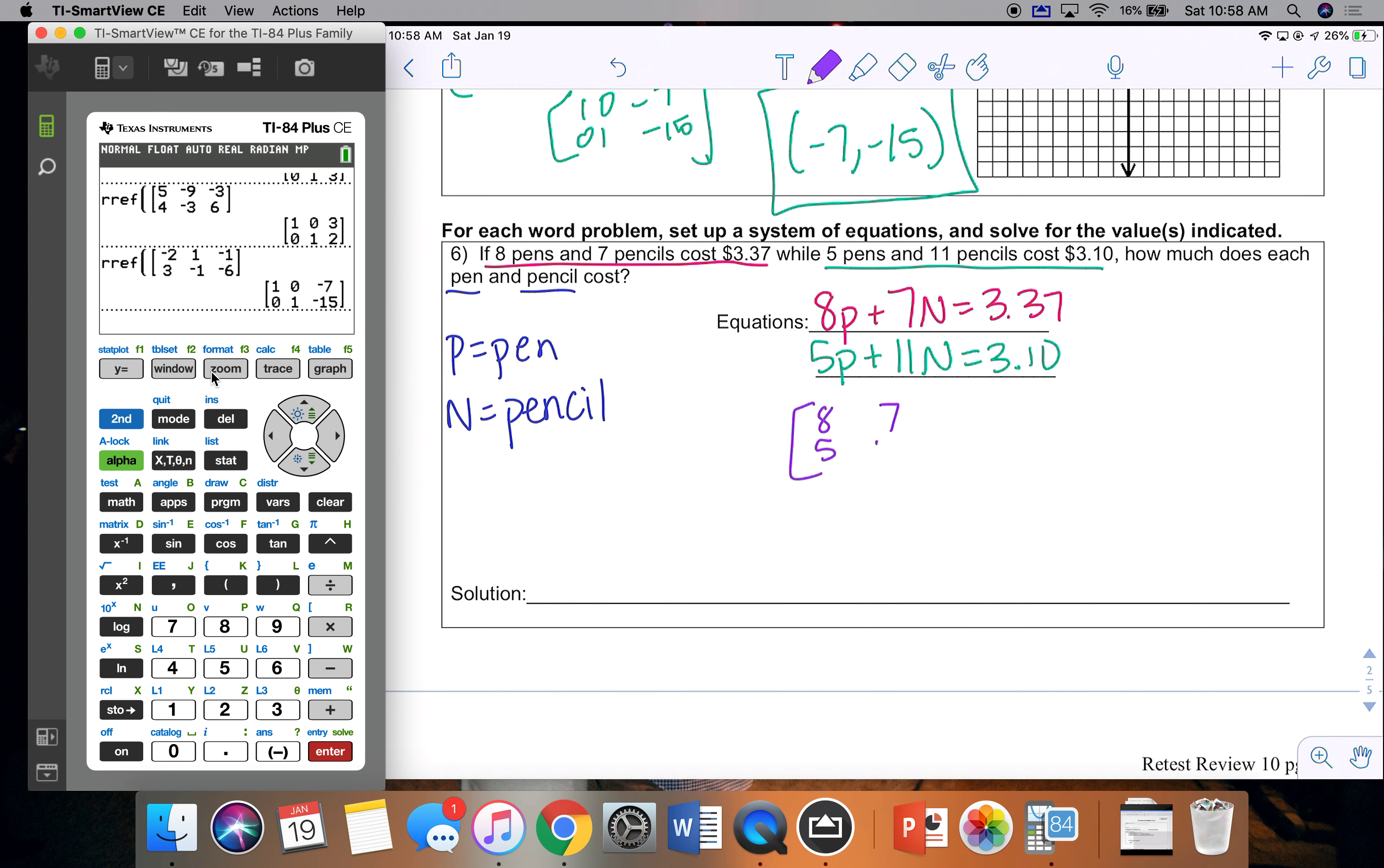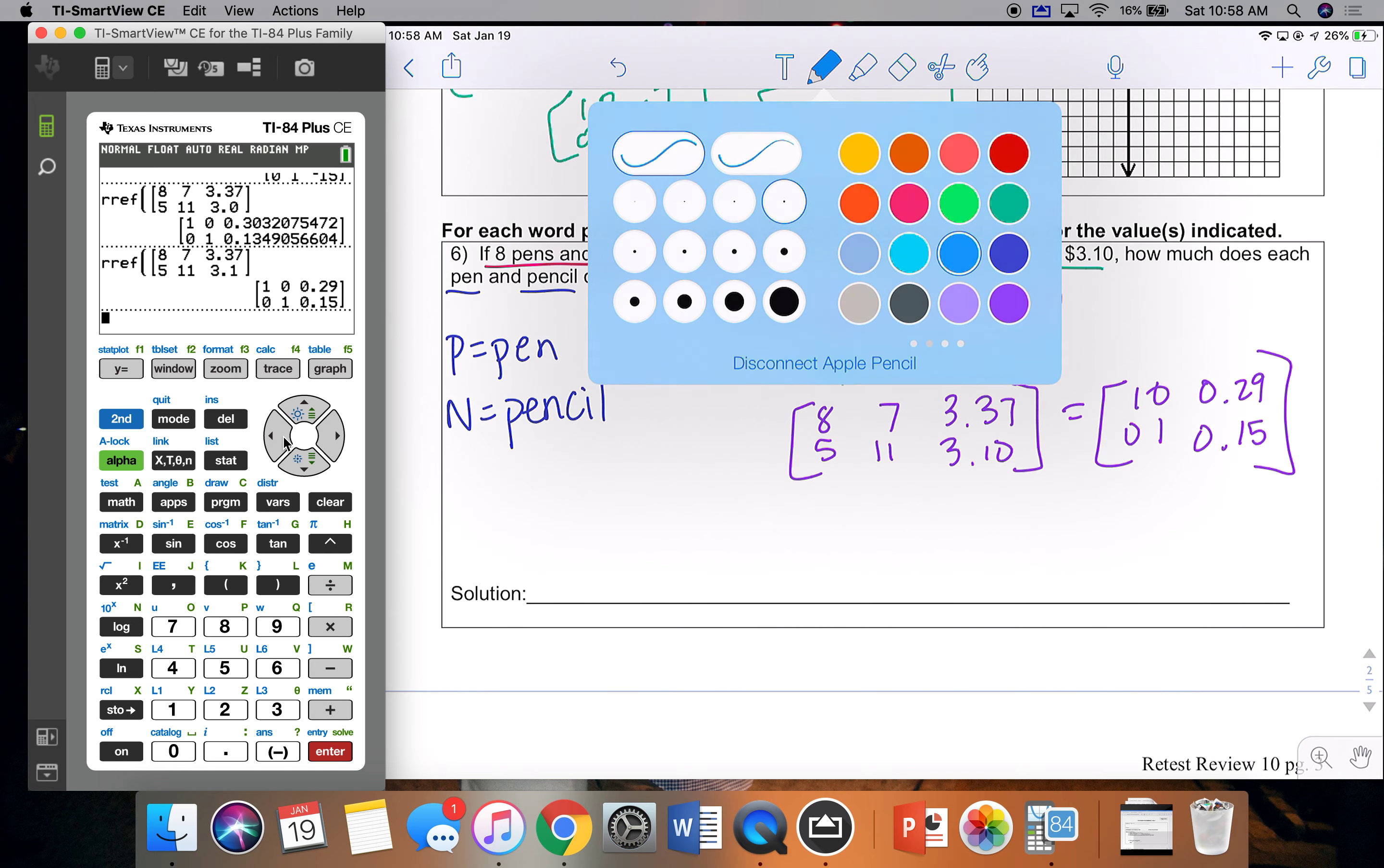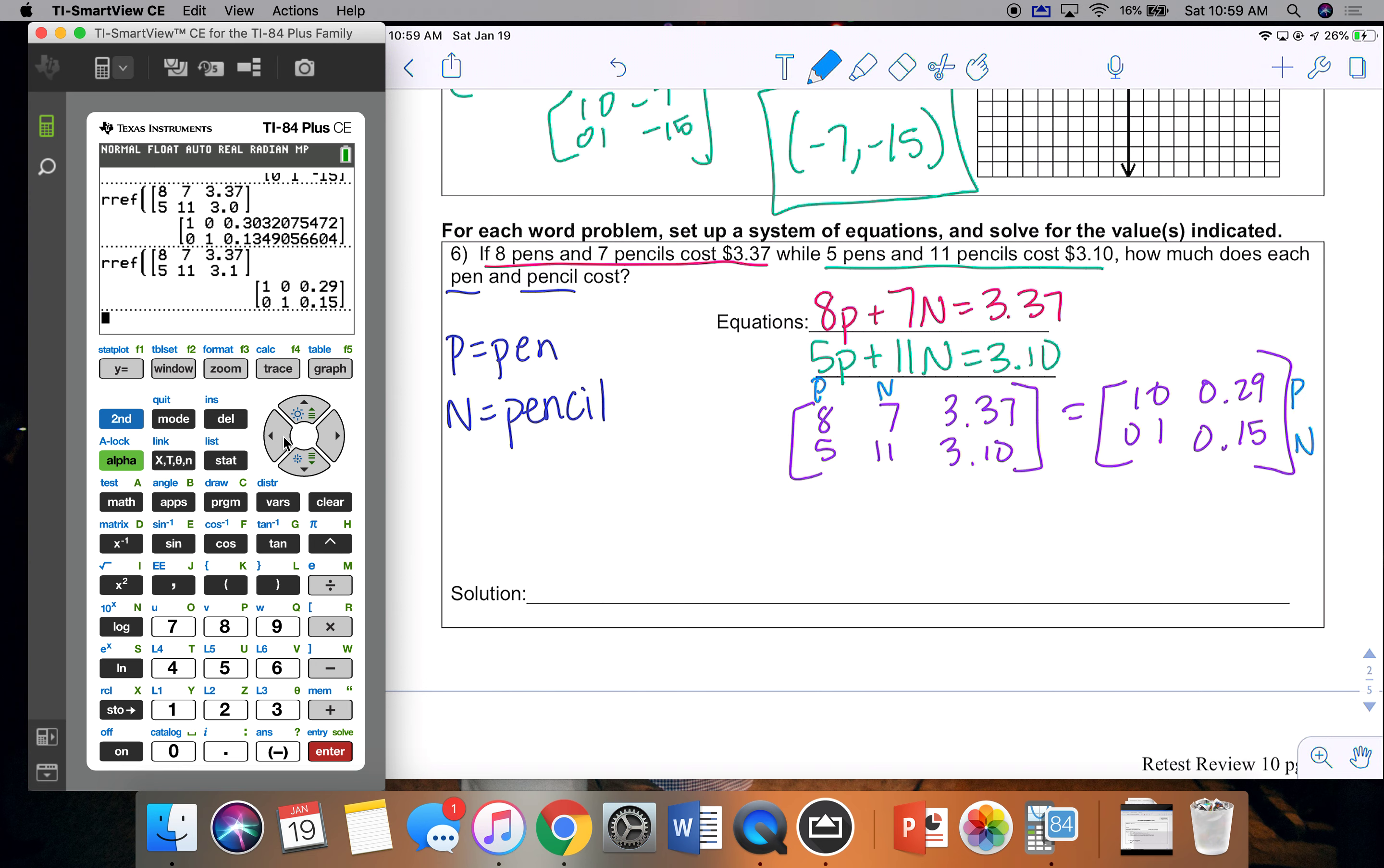And then from here, these are set up for matrices, so I can go ahead and plug that in. So again, if you can make sure you know how to do this, now all you have to do is set it up. So remember, I put in pens, then pencils, so they come out pen, then pencil. So 0.29 would be for my pens, and 0.15 would be for the pencils, because they pop out in the same order that I entered them.